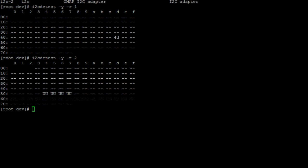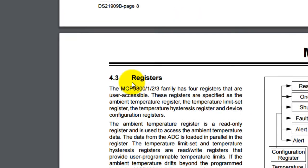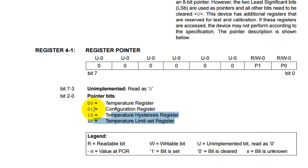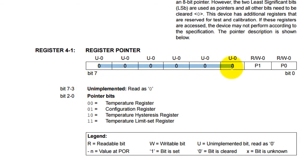First we'll use i2cget to read the values of a register from our I2C temperature sensor. Looking at the datasheet under the registers section, there are four registers we can read and write to: the temperature register at 0x00, the configuration register at 0x01, the temperature hysteresis register at 0x02, and the temperature limit set register at 0x03.